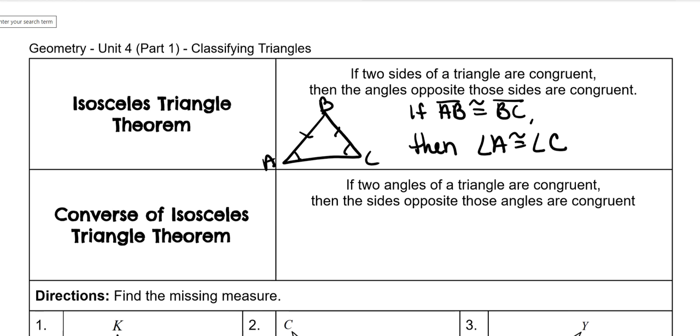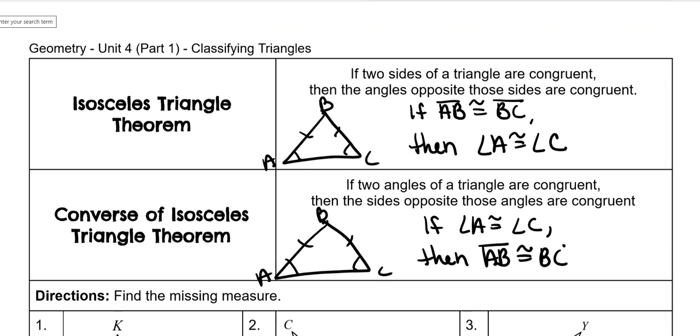And then the converse of that is just backwards. So this one says if you know the angles are congruent, then you know that the sides are congruent. So you only ever need to know one of them in order to know that the others are also congruent.